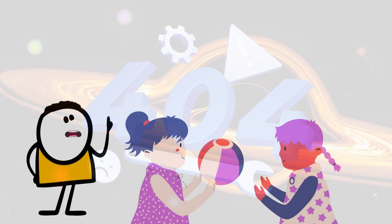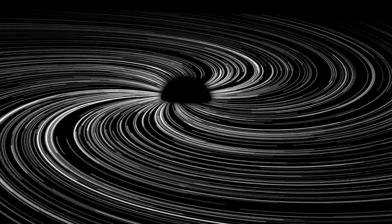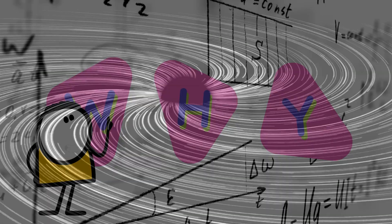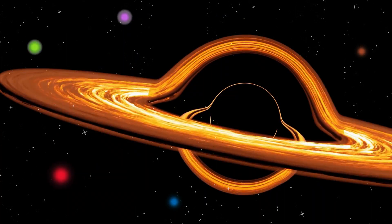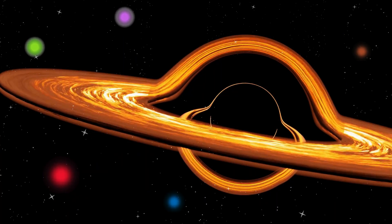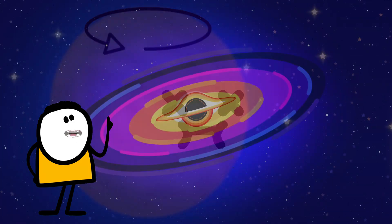Okay, so everything we just said? There's a catch. It only applies to non-spinning black holes. Why? Because that math is easier. But in reality? Every black hole spins. They're born from dying stars, massive, fast-spinning monsters, and they keep that rotation.